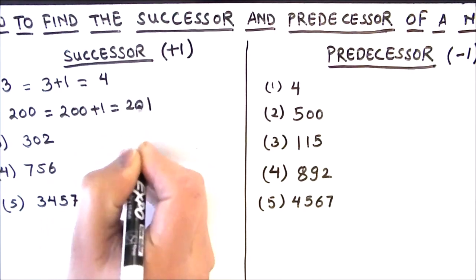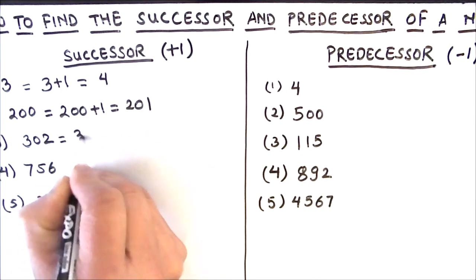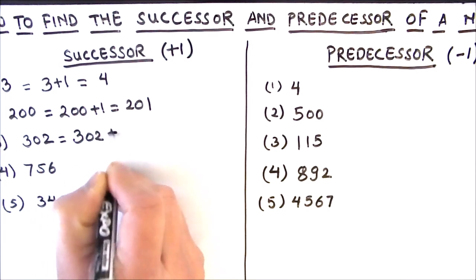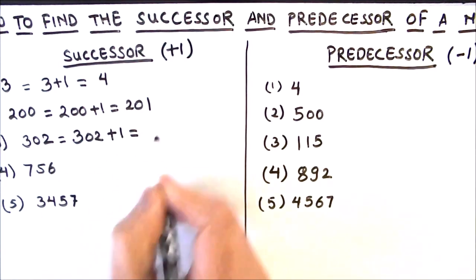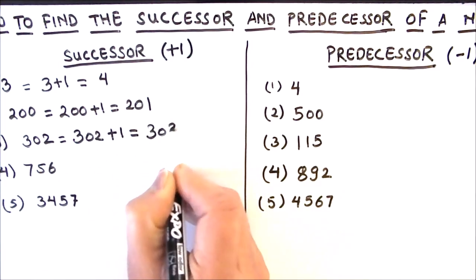Next we have 200, so 200 plus 1 is equal to 201. So successor is a number which comes just after the given number.